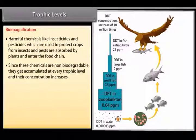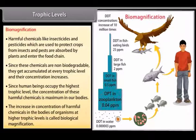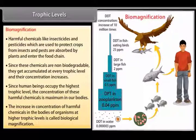Since these chemicals are non-biodegradable, they get accumulated at every trophic level and their concentration increases. Since human beings occupy the highest trophic level, the concentration of these harmful chemicals is maximum in our bodies. The increase in concentration of harmful chemicals in the bodies of organisms at higher trophic levels is called biological magnification.